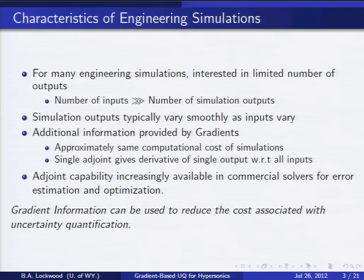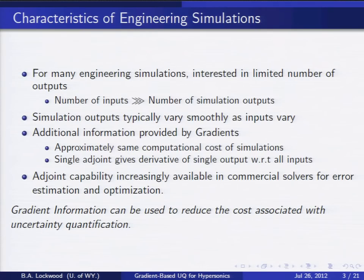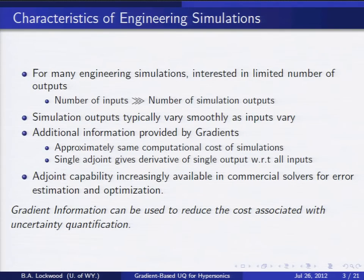Because our governing equations are PDEs, these simulation outputs typically vary smoothly as a function of our input parameters. Because of that, we can use gradient information — the derivative of our output with respect to our inputs — to give us more information at reduced cost. Using an adjoint technique, we calculate the derivative of a single output with respect to all inputs in a constant amount of time proportional to the cost of the simulation — essentially free information. Adjoint capability is increasingly available in commercial CFD solvers, normally for error estimation and optimization, but the goal here is to use it to reduce the cost of uncertainty quantification.